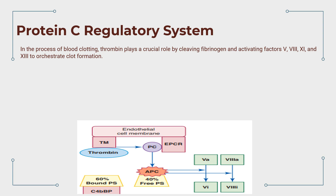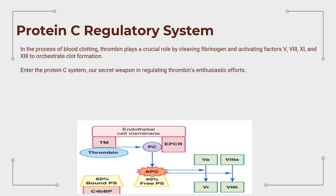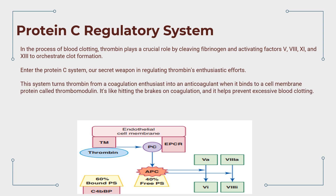Thrombin orchestrates clot formation by cleaving fibrinogen and activating factors V, VIII, XI, and XIII. But when we don't want clotting to get out of hand, the protein C system steps in — our secret weapon in regulating thrombin's enthusiastic efforts. This system turns thrombin from a coagulation enthusiast into an anticoagulant when it binds to a cell membrane protein called thrombomodulin.